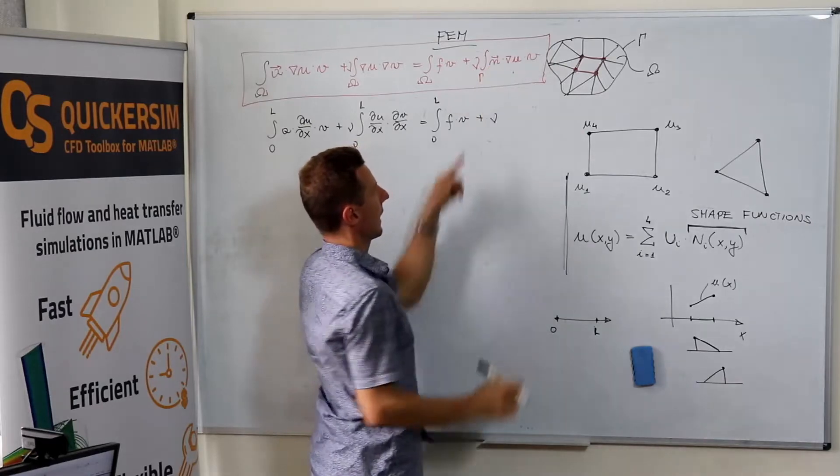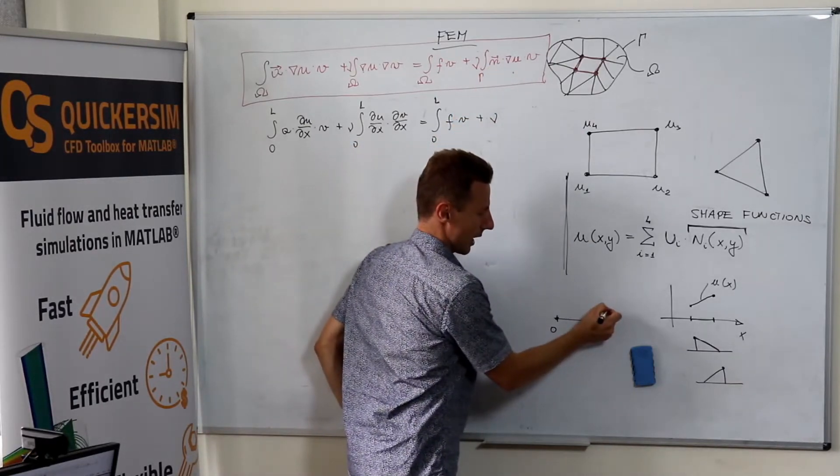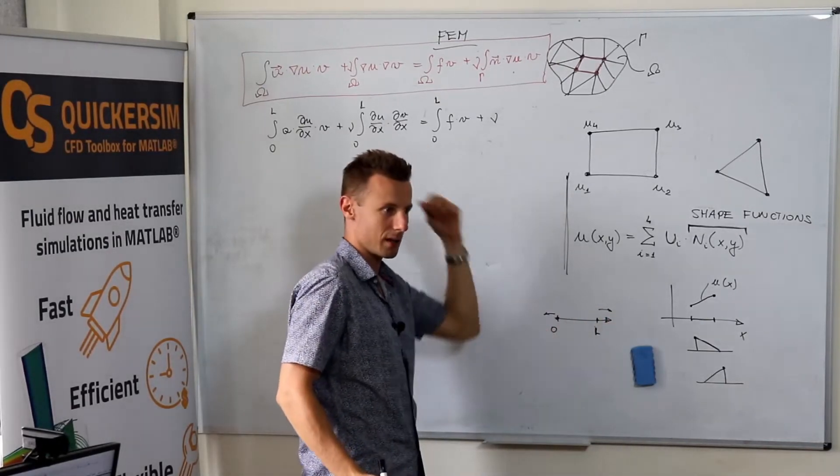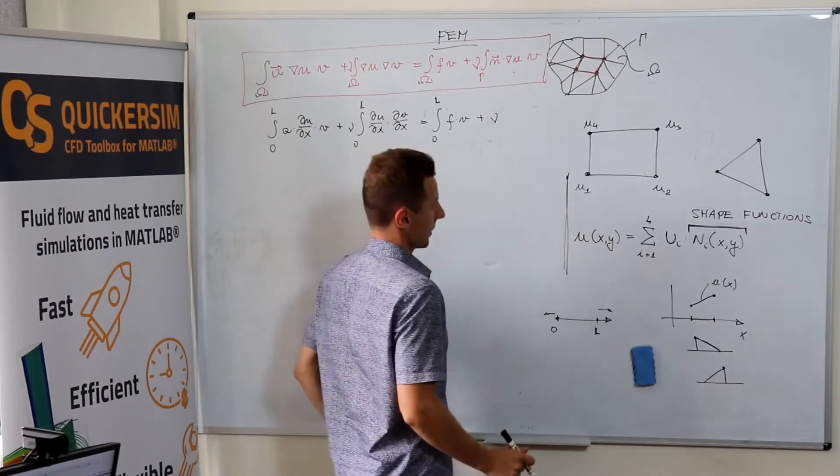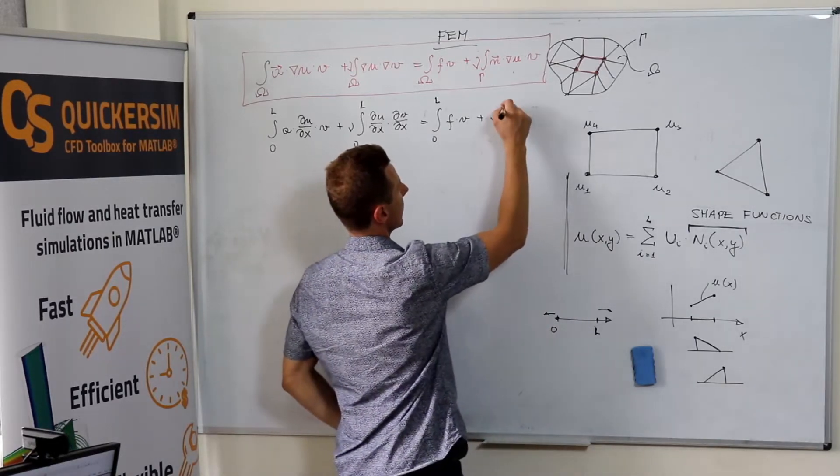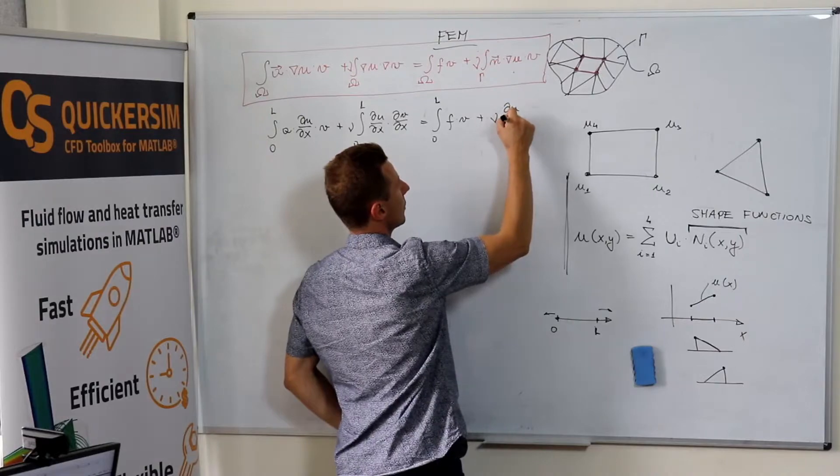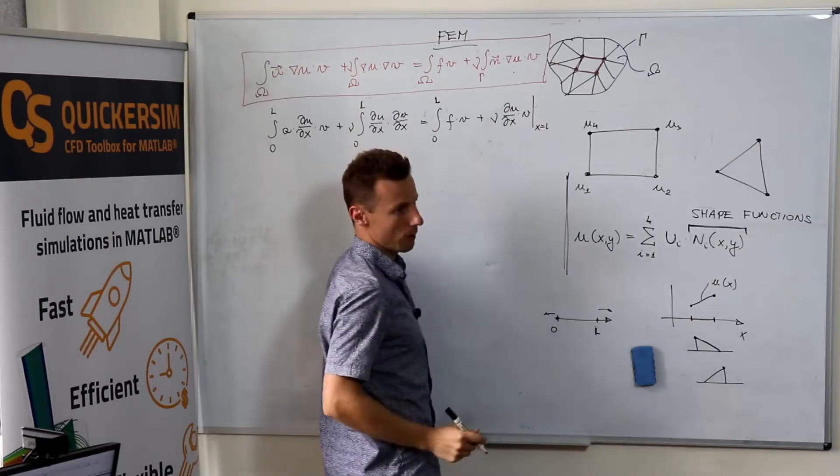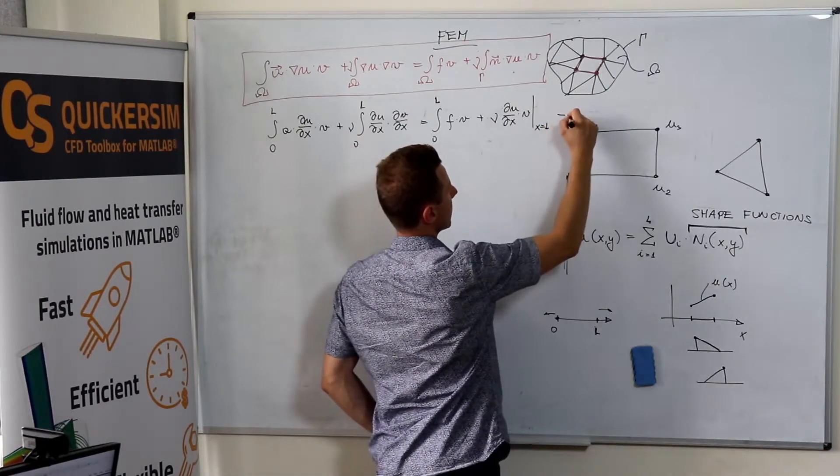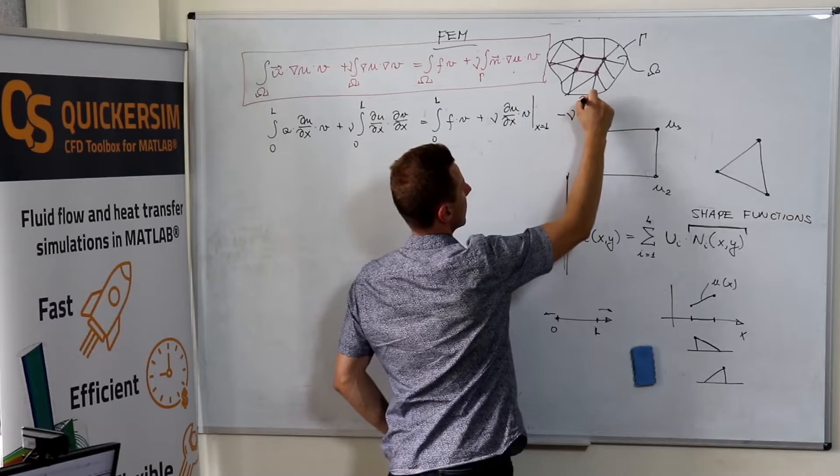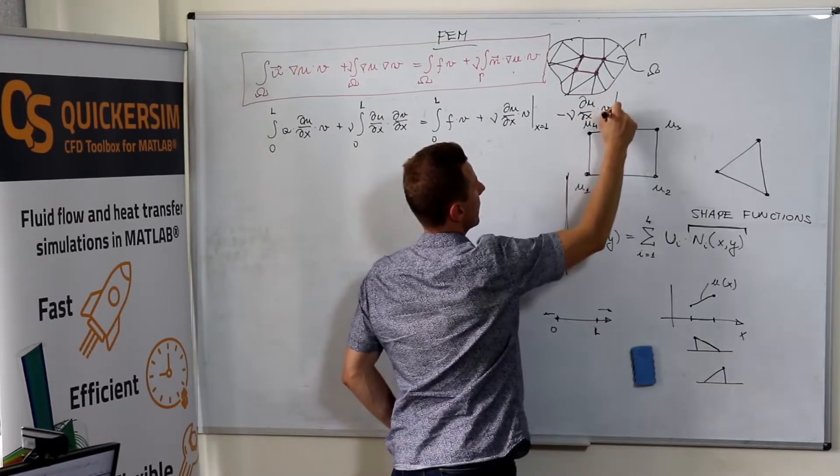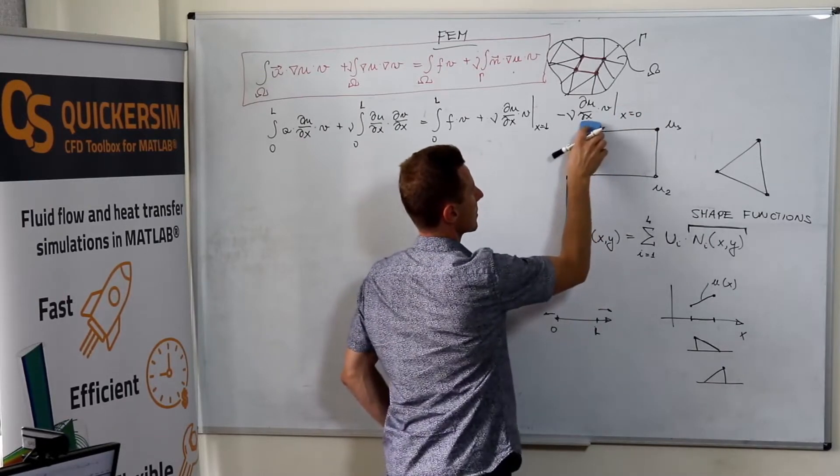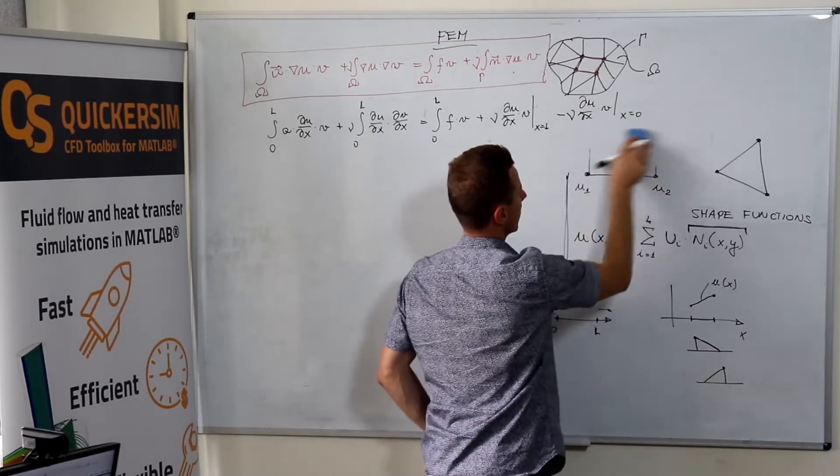It's nothing else as evaluating the function ni, where n is nothing else that gives you either positive sign in the upper limit or negative sign in the lower limit. So it's nothing else like du dx times v at x equal l minus du dx times v at x equal zero.